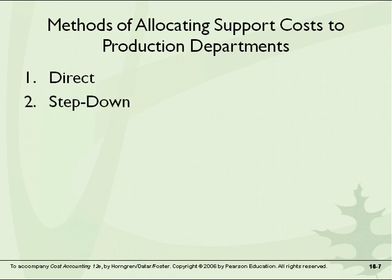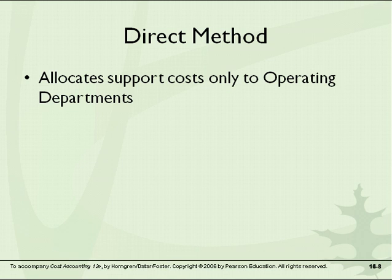There are different ways of allocating support costs to production departments as well: the direct method, the step-down method, and the reciprocal method. With the direct method, the allocation of support costs only goes to the operating, manufacturing, or production departments. So the allocation of staff departments only goes to the line departments.